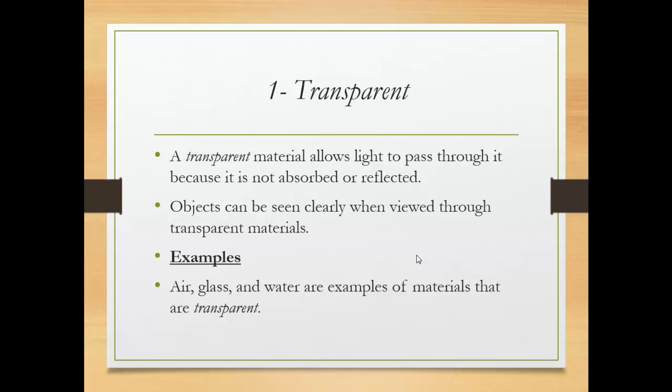The first one, transparent material, allows light to pass through it because it does not absorb or reflect light. Objects can be seen clearly when viewed through transparent material.